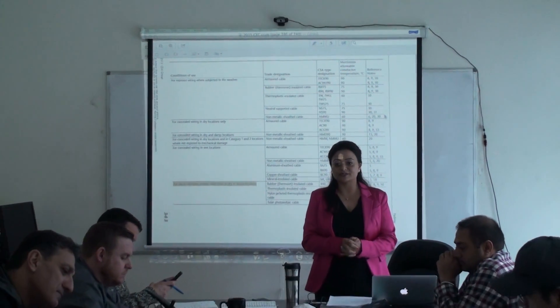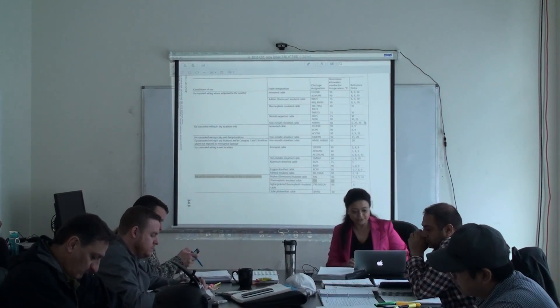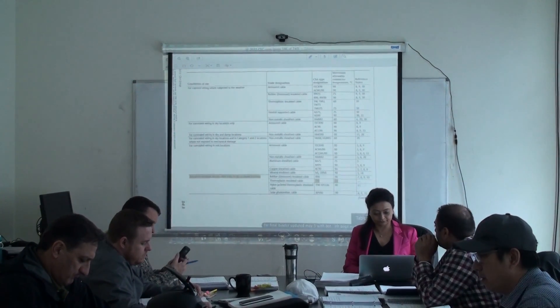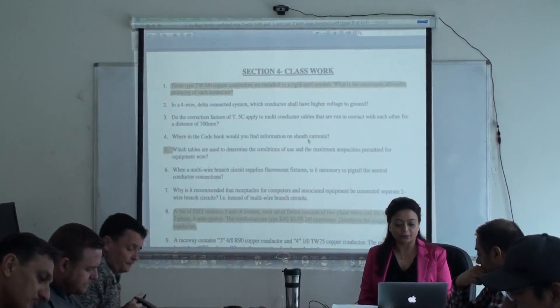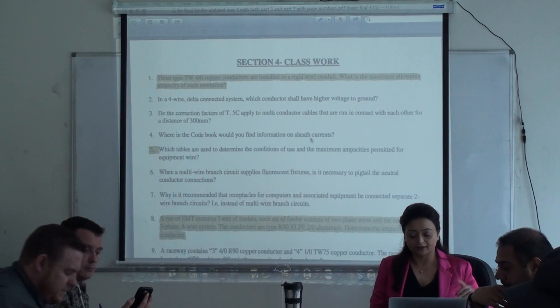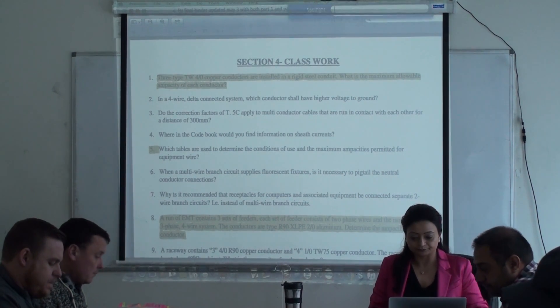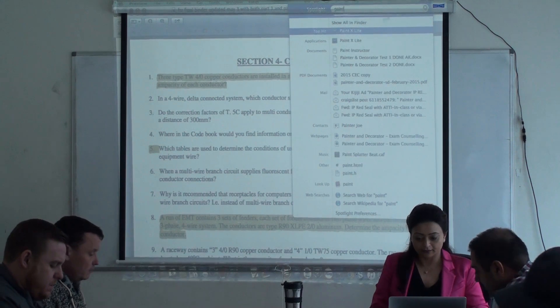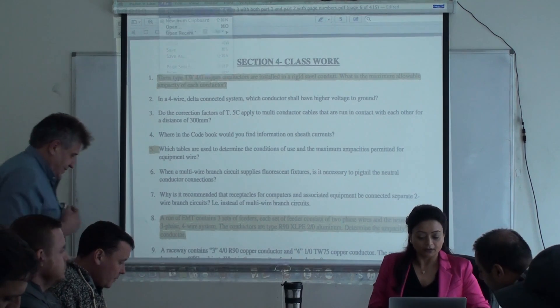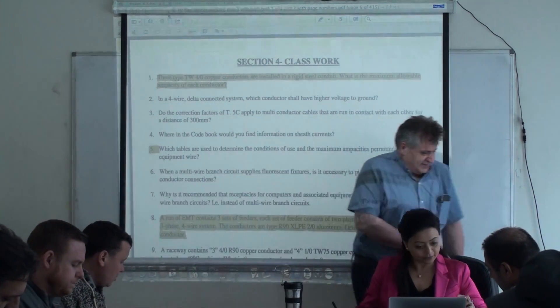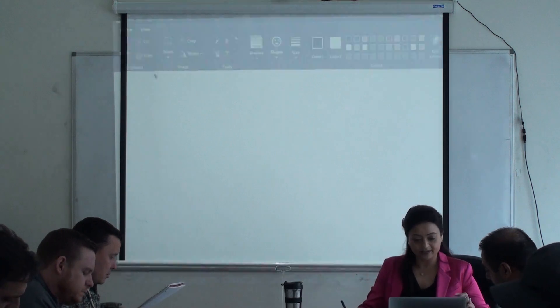Alright guys, let's review those six, seven questions I gave to you. Starting with the first one, there are three TW conductors, they're all four AWG. I'm gonna start with you, just give me the information and I'm gonna write it. Tell me in session one on classwork assignment.